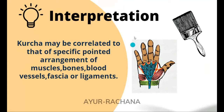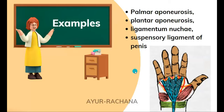For example, I have taken the picture of a dissected hand where the blue color representation is that of the palmar aponeurosis. You can see the blood vessels and nerves coming below it, and the muscle fibers are also converging at that area. This converging point can be considered as the kurcha itself.